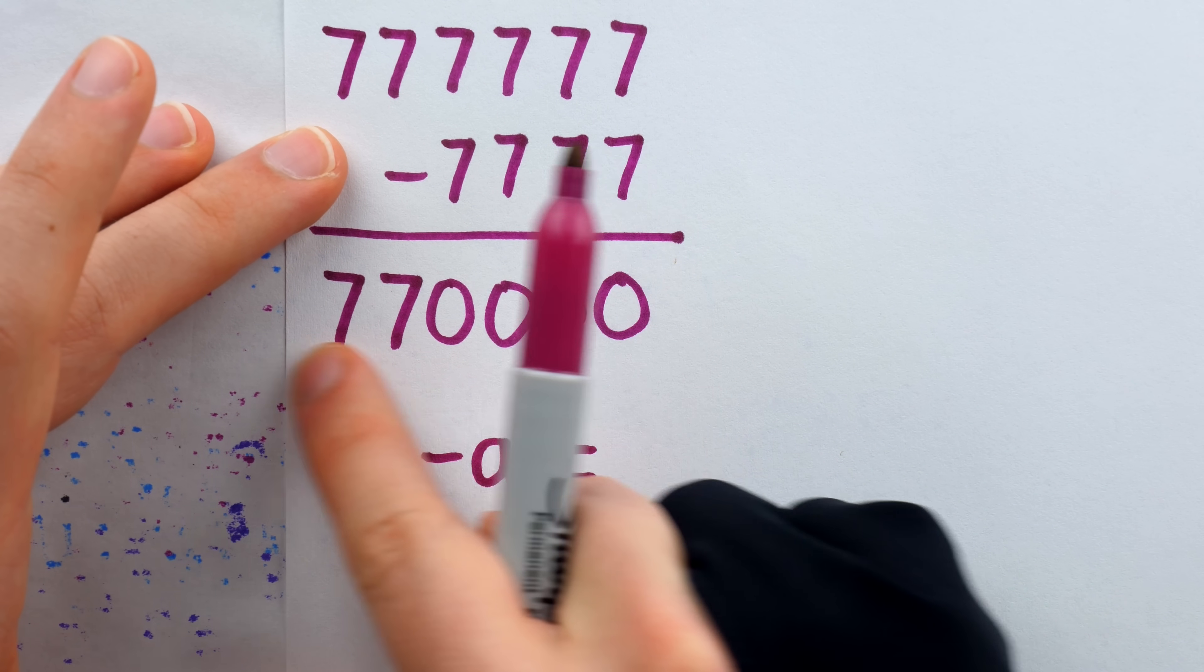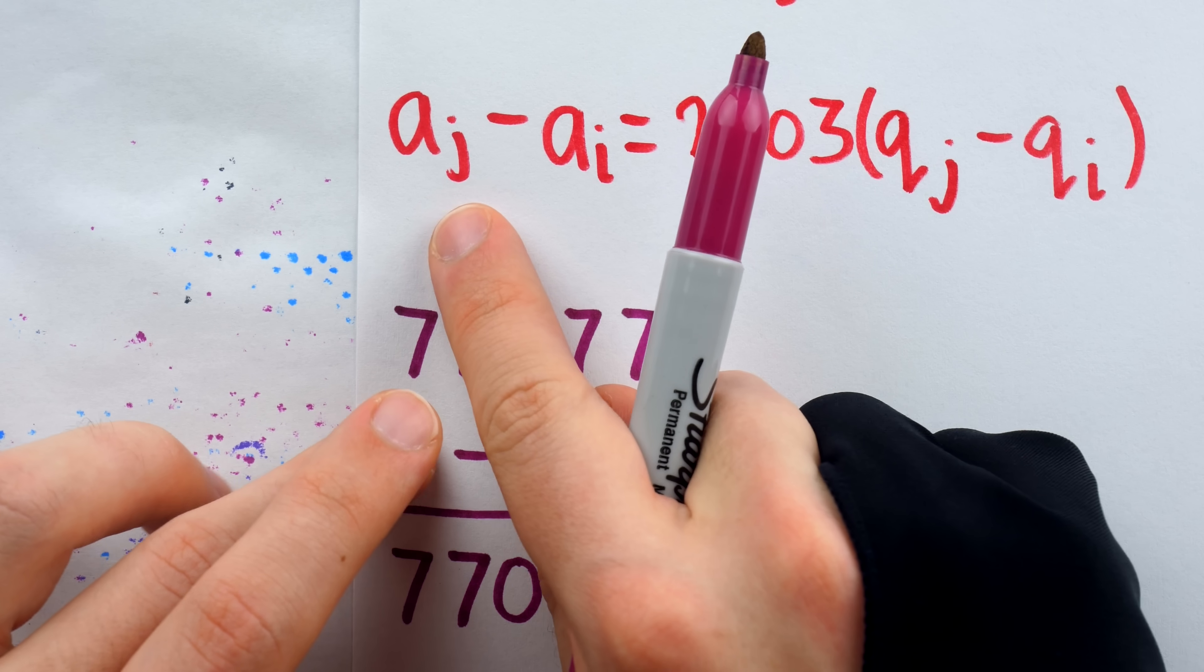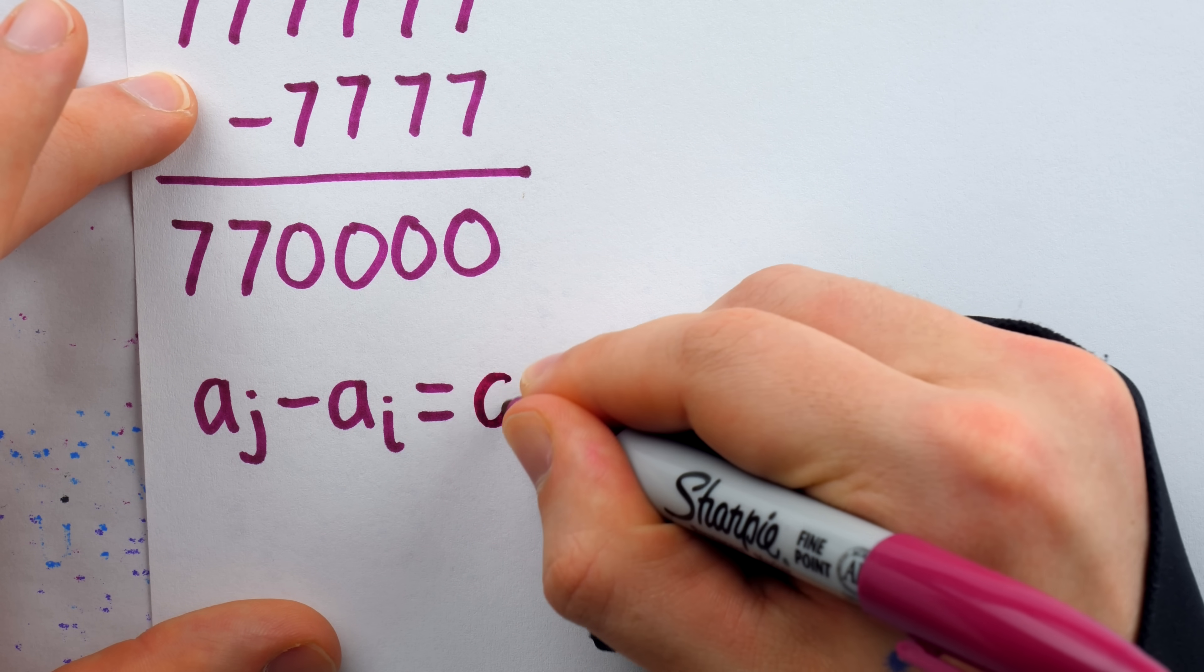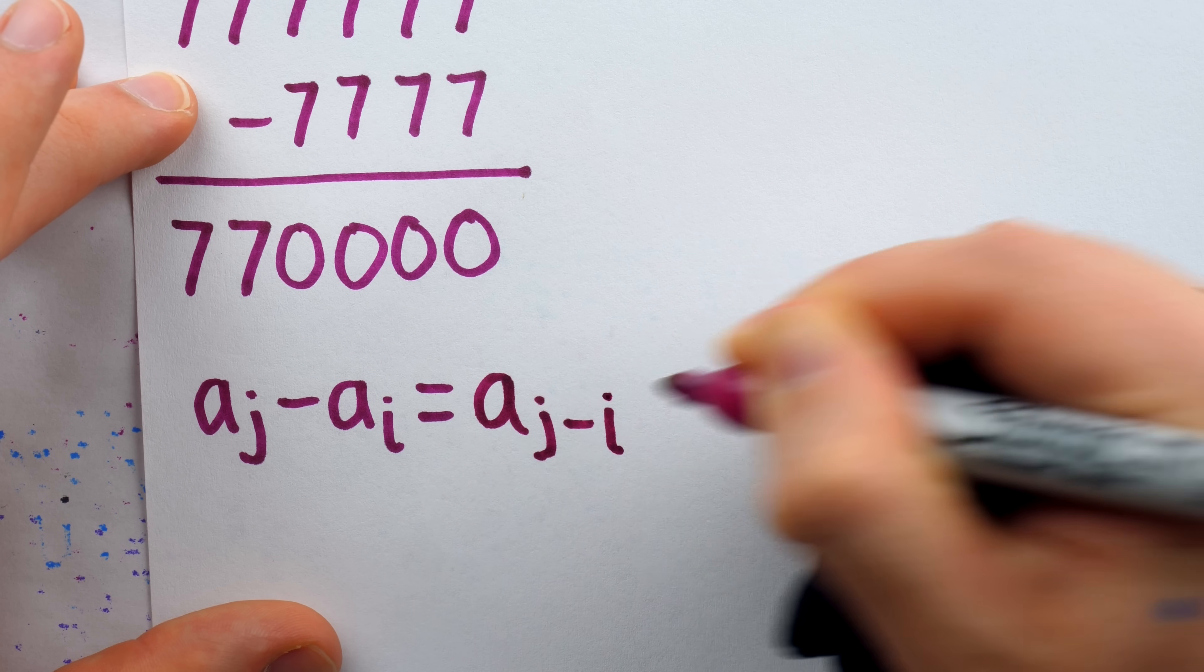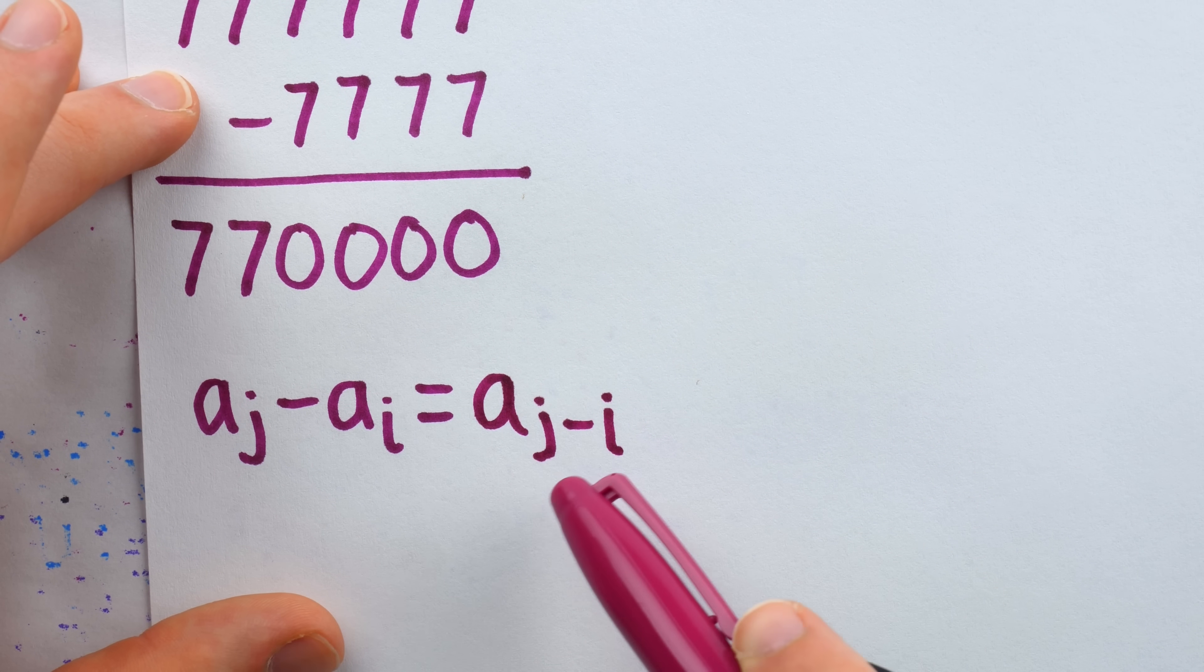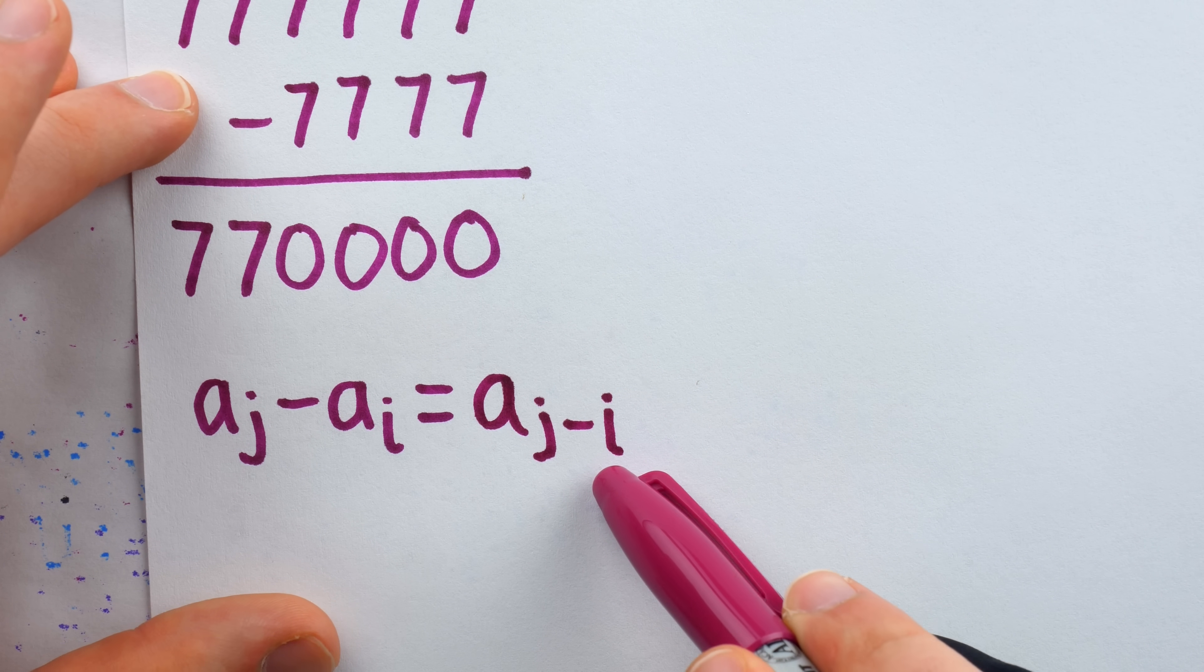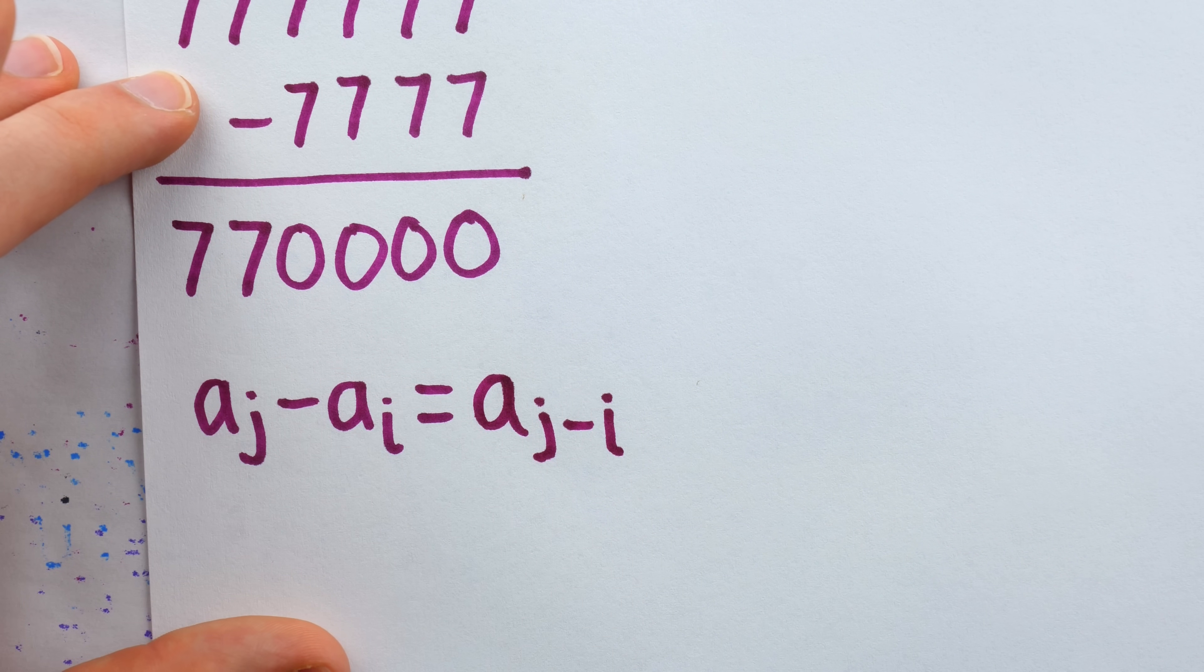This number begins with a bunch of sevens. How many exactly? Well, it depends on how big j is compared to i. So the start of the number actually just looks like the (j minus i)th term of the sequence, because this term of the sequence has j minus i sevens. That's exactly how this difference starts. j minus i sevens.